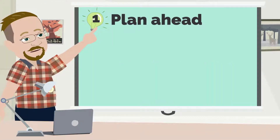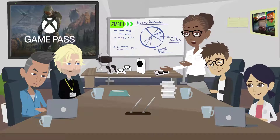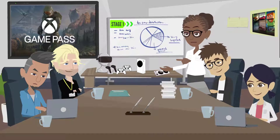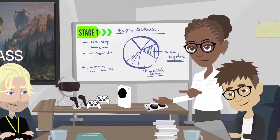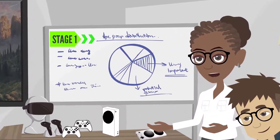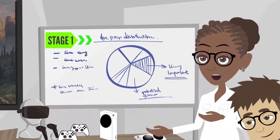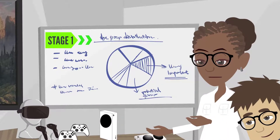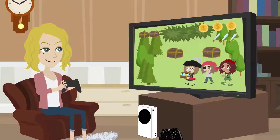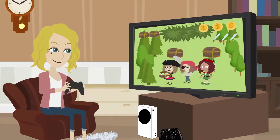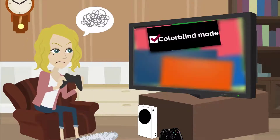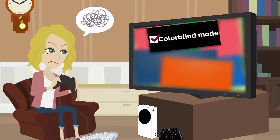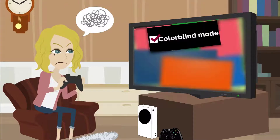Number one: plan ahead. Define your accessibility goals early on in the product lifecycle. Truly accessible gaming experiences are built by design, not as last-minute add-ons. This means that additional features added later on in the development cycle to fix inaccessible designs are not always effective for players.